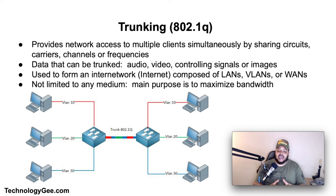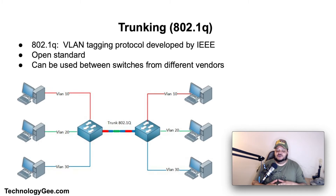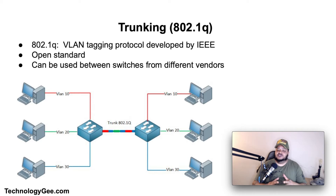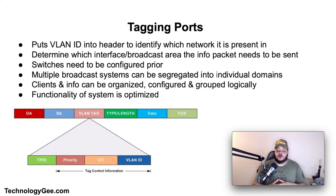Trunking is not limited to any medium since its main purpose is to maximize the bandwidth available in any type of network. 802.1Q is a VLAN tagging protocol developed by the IEEE, the Institute of Electrical and Electronics Engineering. Since it is an open standard, it can be used between switches from different vendors — so if you're trunking between a Cisco switch and a different brand of switch, you can use 802.1Q for the trunk to work.